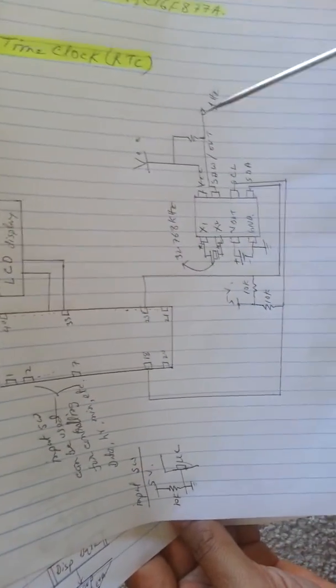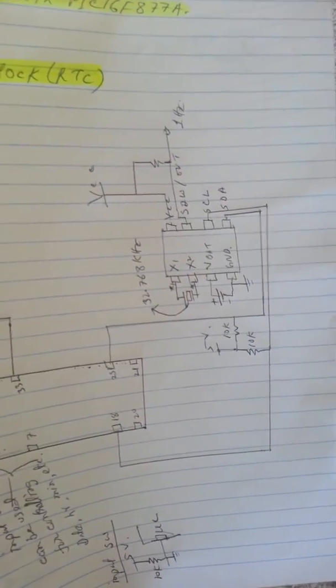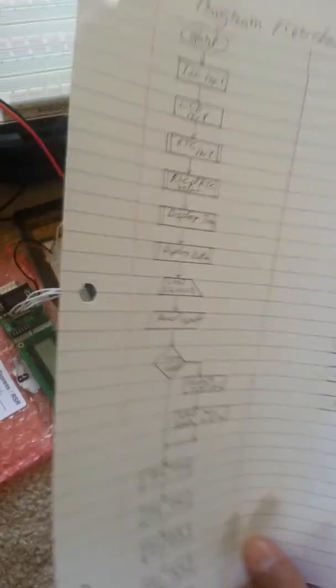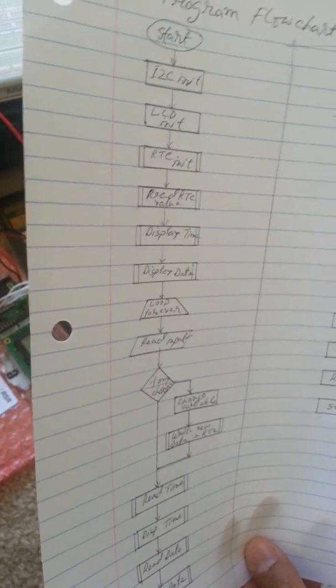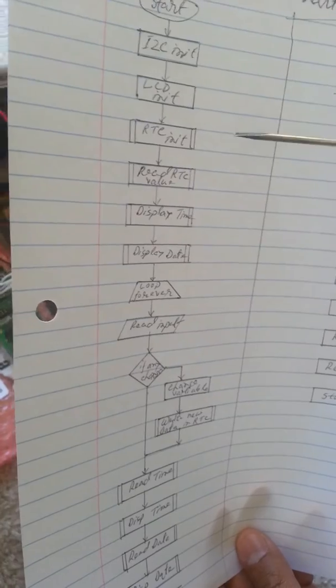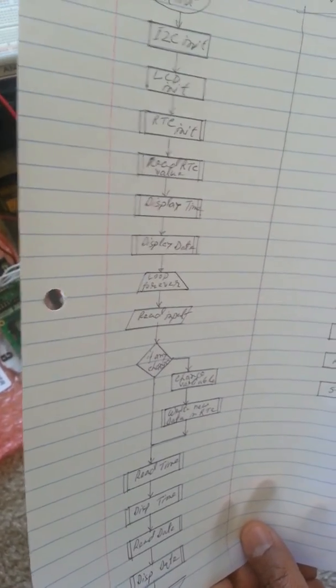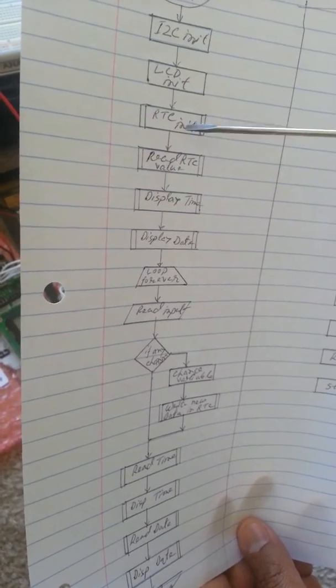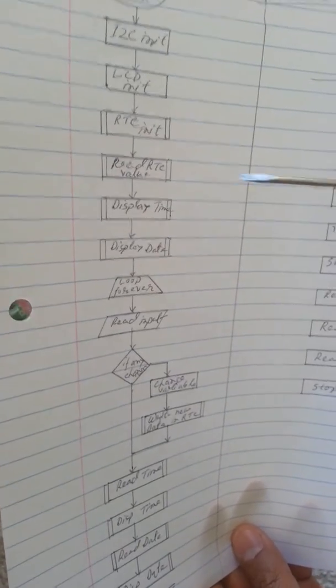You need to communicate with this RTC with I2C protocol of microcontroller. Most microcontrollers have this protocol. First, you need to initialize the I2C protocol in the microcontroller, then initialize the LCD because you need to display the data. Then you need to call a macro or subroutine to initialize this RTC real-time clock, that means you need to write the predefined value that you want.